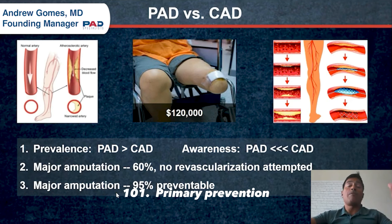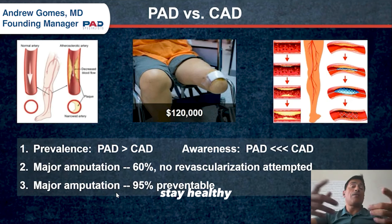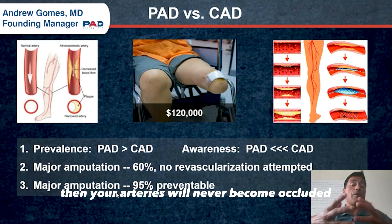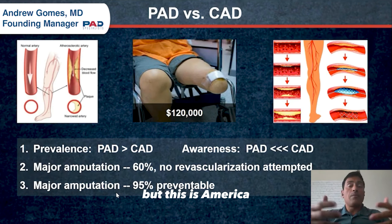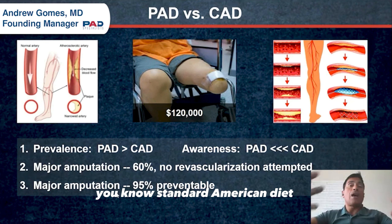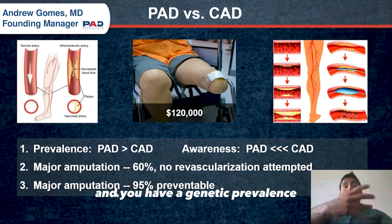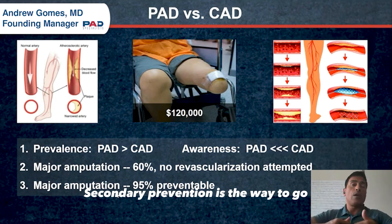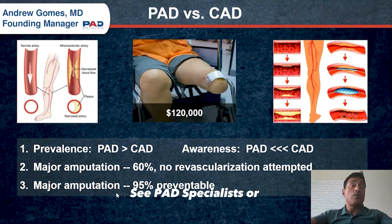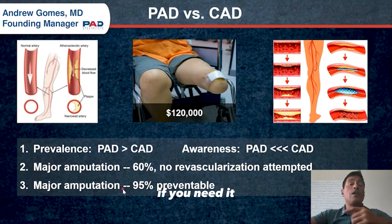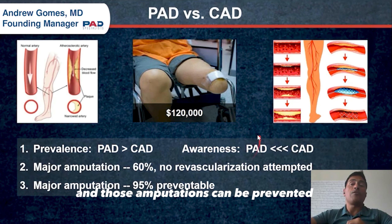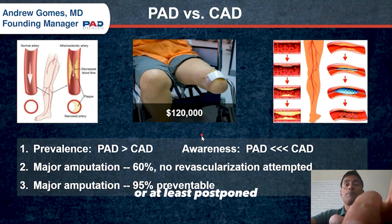That's secondary prevention 101. Primary prevention — stay healthy, don't get obese, don't get diabetes, don't smoke — and your arteries will never become occluded. But things happen, and you may have a genetic predisposition. Secondary prevention is the way to go: see a PAD specialist, get evaluated. If you need an endovascular procedure, that can be done safely with great effect, and those amputations can be prevented or at least postponed.